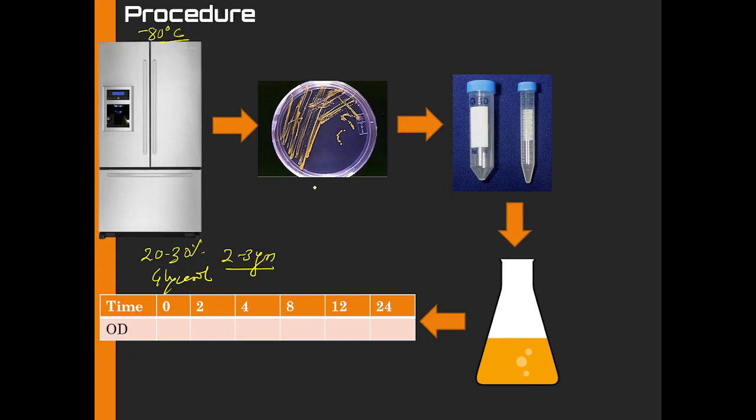First you will make the YPD plates. After the YPD plates you will streak your culture and then you incubate at 28 to 30 degrees Celsius. The optimum temperature varies but usually people use 28 degrees Celsius. Allow it to grow for two days.